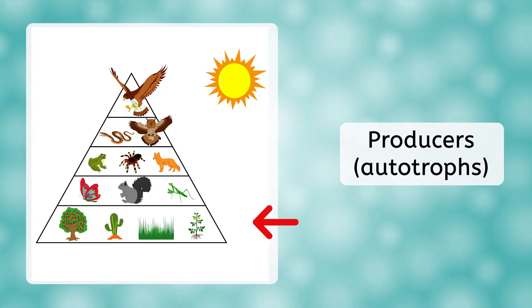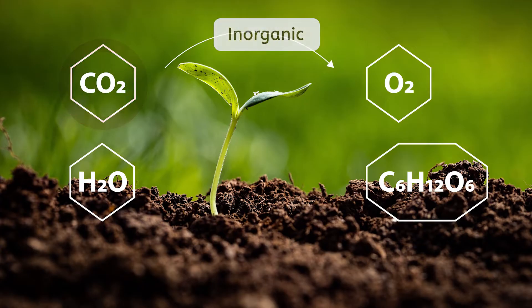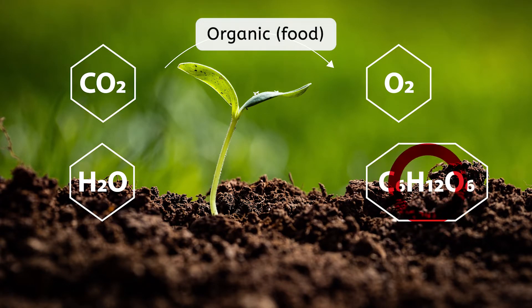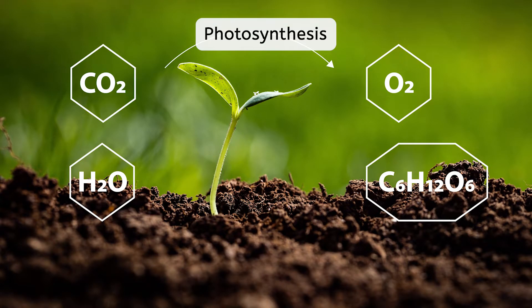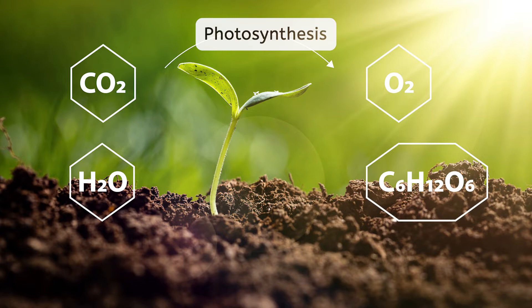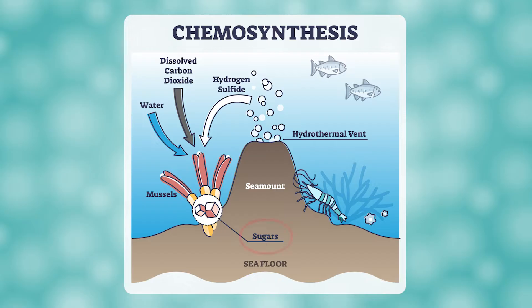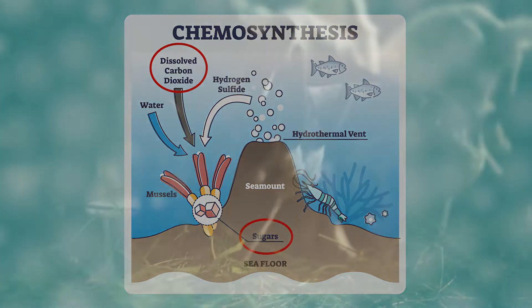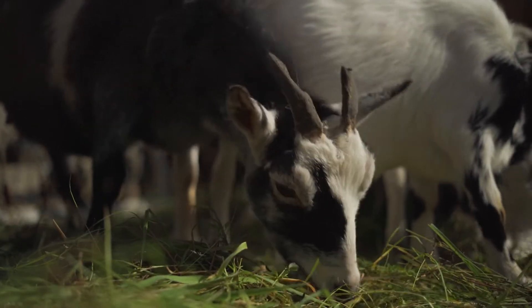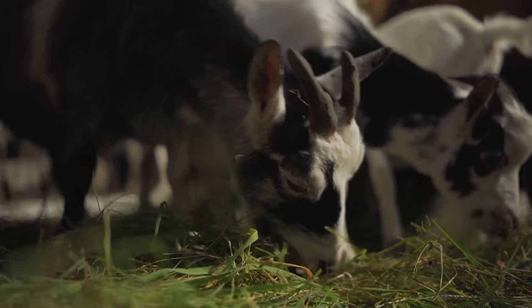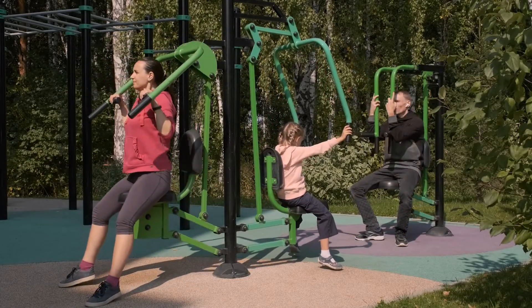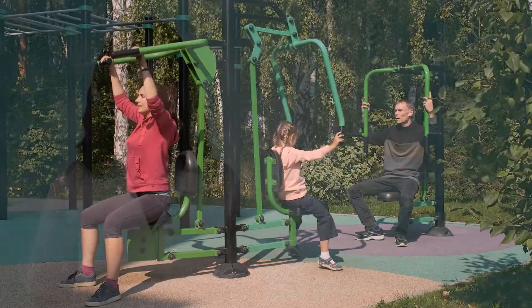Most producers do this through photosynthesis, which, as you hopefully remember, requires sunlight. However, there are some organisms that can do chemosynthesis, which creates organic carbon molecules using energy derived from chemical reactions that don't need sunlight. The organic molecules made by producers will eventually be transferred up the food chain as these organisms are eaten. Even your body is built by organic molecules that were originally made by a producer. So this means that consumers, like you and me, depend on the nutrients made by producers, because we cannot make the basic organic compounds needed using only inorganic sources.